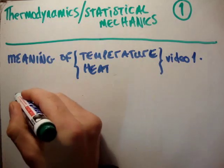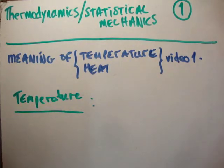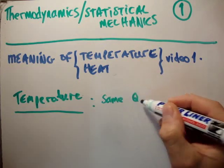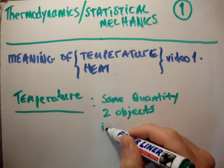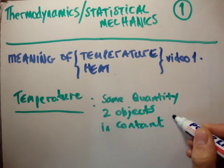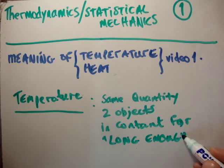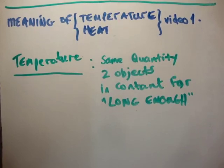Let's first of all talk about temperature. What is temperature? Temperature is the thing that is the same for two objects when they have been in contact for long enough. That's a very general description of what temperature is, but it's actually a reasonably good one. Temperature is the same quantity which two objects have when they have been in contact with each other for long enough.